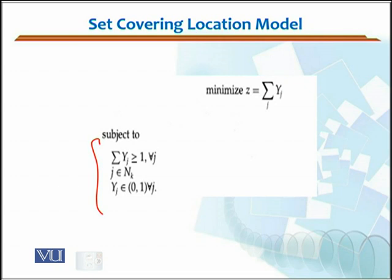j actually belongs to n cases — j could be any number up to n. There is a large pool that belongs to that. Then yj should belong to {0, 1} — y would either be 0 or 1 for different values of j. Some vendors will be selected, some will not. These are the three constraints you need to define for a set covering model.